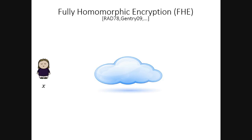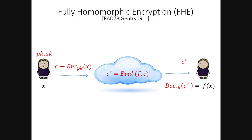Most of you have already heard or know what fully homomorphic encryption is, but just a very brief review. We have some party that has a value X, and fully homomorphic encryption lets you encrypt this value X just like you would with a standard encryption scheme — you choose a public key, secret key, encrypt X, and send the ciphertext to, say, the cloud. The cloud can then homomorphically compute any function F over the data by doing corresponding homomorphic operations on the ciphertext and output some ciphertext C*, which decrypts to F of X. This is fully homomorphic encryption, or FHE for short.